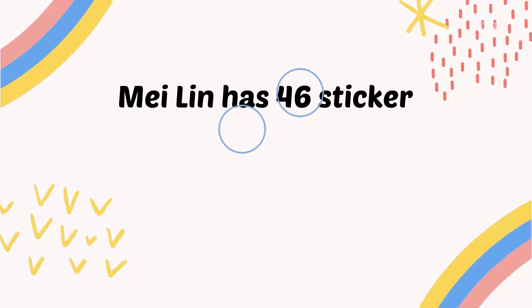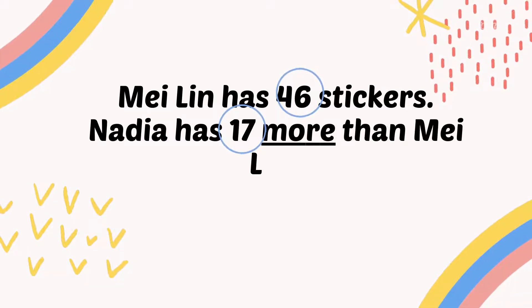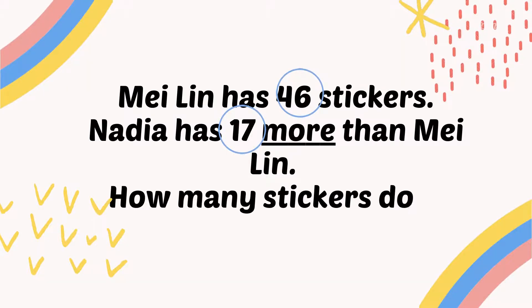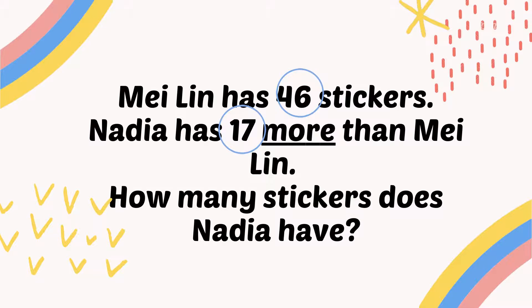The clues are: number 46, which is Mailin's stickers, and number 17 — as the question says, Nadia has 17 more than Mailin. We also need to emphasize the word 'more'. The word 'more' is a key clue, and we want to find Nadia's stickers. So I'm going to explain the word 'more' first.